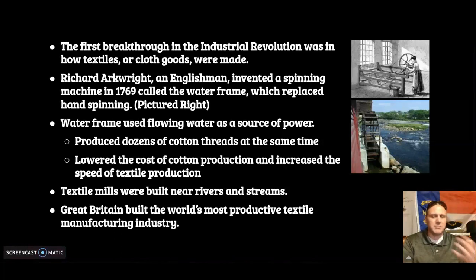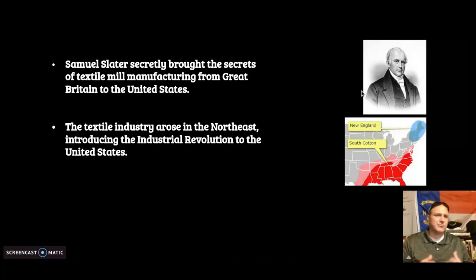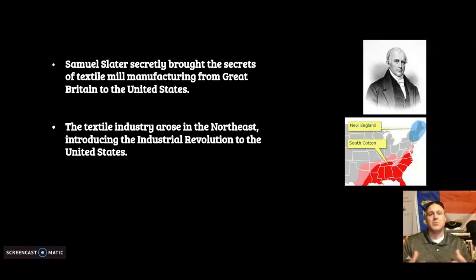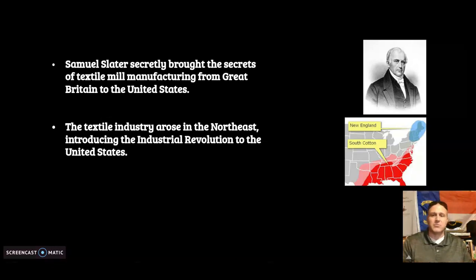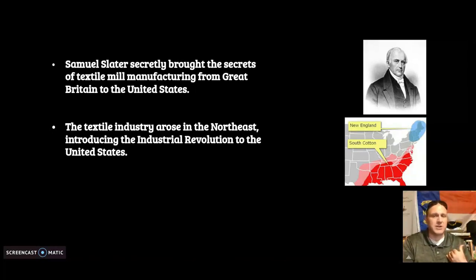Southern raw goods were being sent over to Britain to be processed and sent back to America. With the Embargo Act, the Non-Intercourse Act, and the War of 1812, America wanted to start making its own goods. Samuel Slater drafted the design of one of those spinning wheels and brought it to the United States, really starting textile mill manufacturing in America in the New England area. The textile industry blew up — you had the Lowell mill girls in Massachusetts and a lot of textiles now in America, taking raw cotton from the South, processing it in the Northeast, and trading it back.